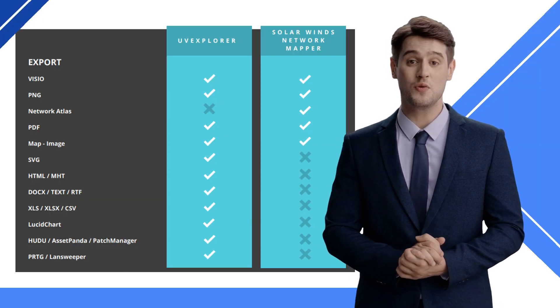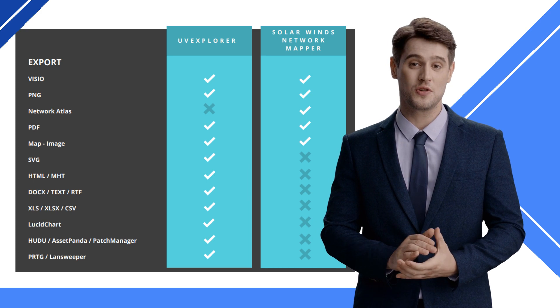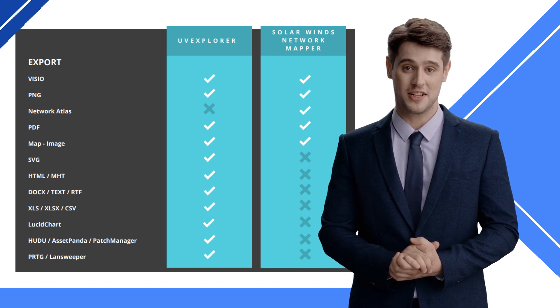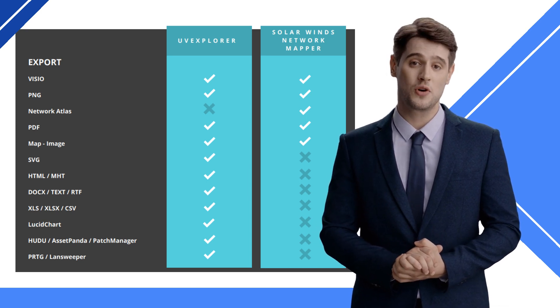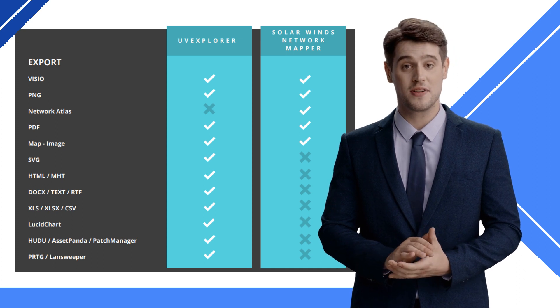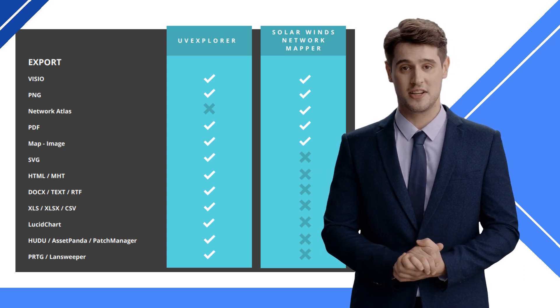UV Explorer is not able to export to Network Atlas, but it will export to Lucidchart, SVG, Visio, HTML, MHT, Word, Text, RTF, Excel, and CSV, as well as to the PRTG, Hoodoo, ITGlue, AssetPanda, and PatchManager platforms.